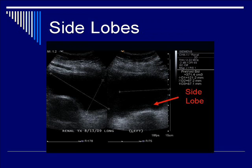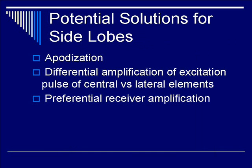This is quite commonly seen in the clinical setting. What are the potential solutions to getting rid of side lobes? From a transducer design perspective, you can do apodization, which we'll discuss in the transducers lecture, which involves making the gain in the center of the transducer be higher than the edge. You can also do differential amplification, or you can do preferential receiver amplification of both the central and lateral elements.